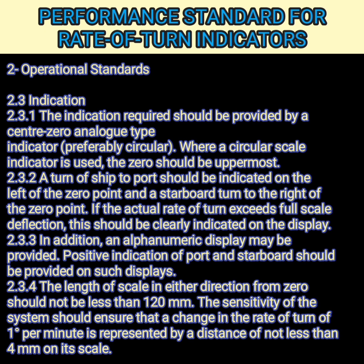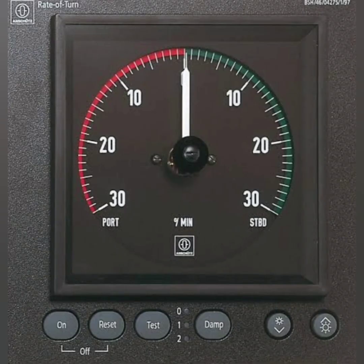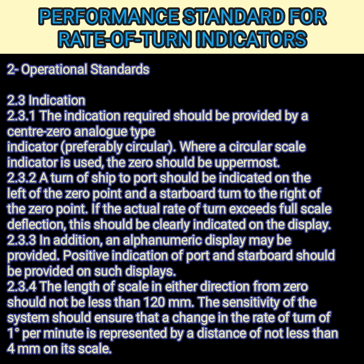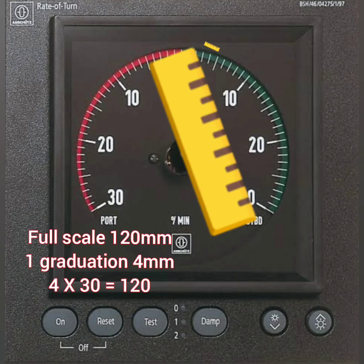There is a requirement that positive indication of port and starboard should be provided on such displays — clearly shown with color and markings. Further, the length of the scale in either direction from zero should not be less than 120 mm. The sensitivity of the system should ensure that a change in rate of turn of one degree per minute is represented by a distance of not less than 4 mm on the scale.